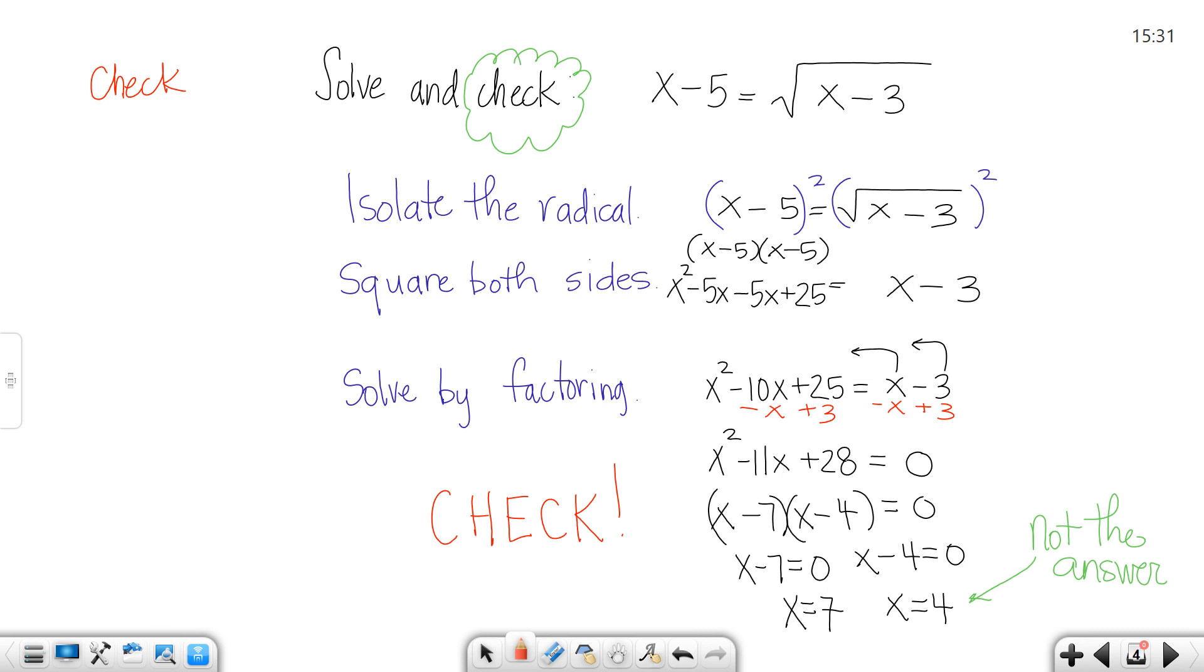So I'm going to come to the side and check. I'm going to take 7 and plug it into the equation. When I plug in 7, I get 7 minus 5 equals the square root of 7 minus 3. 7 minus 5 is 2. This would be the square root of 4. The square root of 4 is 2. So this is a true statement. That means that 7 works.